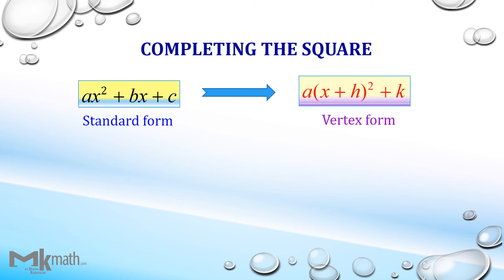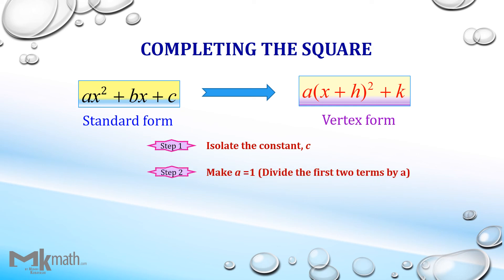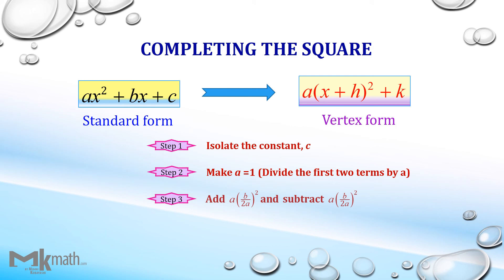In summary, to change the standard form to the vertex form by completing the square, there are three steps. Step 1: isolate the constant c. Step 2: make the leading coefficient a equal 1 by dividing the first two terms by a. Step 3: add and subtract half the coefficient of the middle term squared. You need to be careful for a not equal to 1 cases. Thank you so much. See you next time.